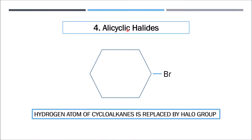The fourth type is alicyclic halides, which is a simple case where, in cycloalkanes, one hydrogen atom is substituted by a halo group to give alicyclic halides.